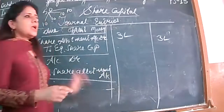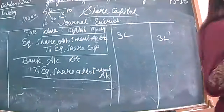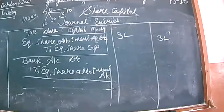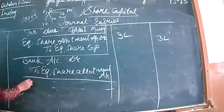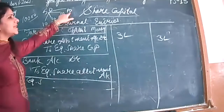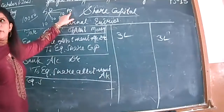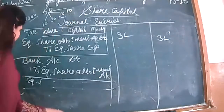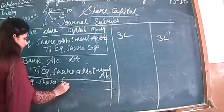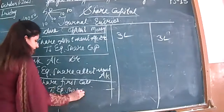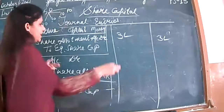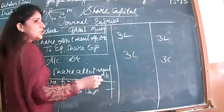Last step: we will inform shareholders that they have to pay the first call. After the first call, we will enter it in the books of accounts. It is a repeated entry — only change the name. The entry will be equity share first call account debited to equity share capital. Similarly, the second and final call. Four installments of 50 rupees the company is earning from shareholders. First call: 10,000 into 10, that is 1 lakh.